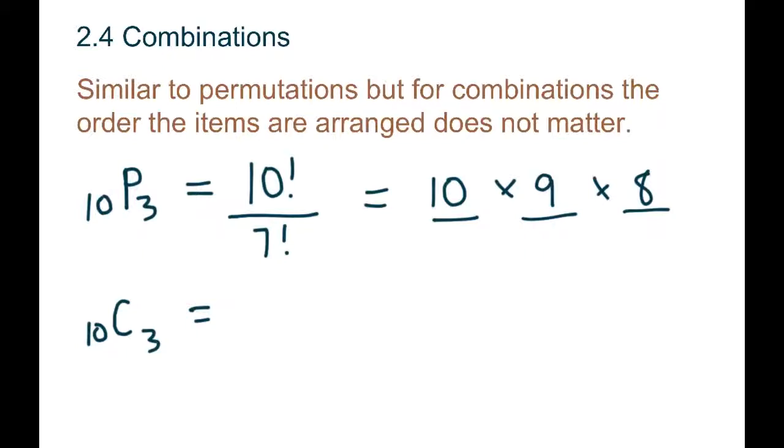So in terms of a combination, just to show you how they're different, is we still have ten people we're picking from. We're still only using three, so that means we don't need the seven. But now, out of those three people, we don't care what order they're in.